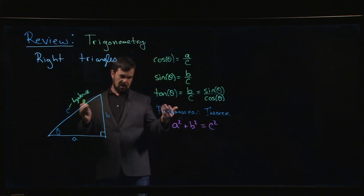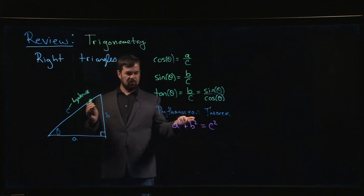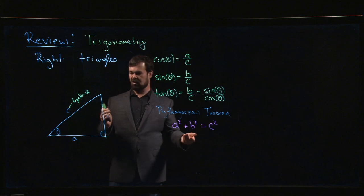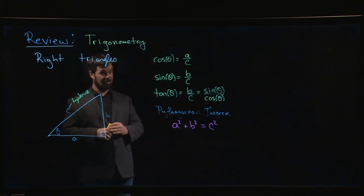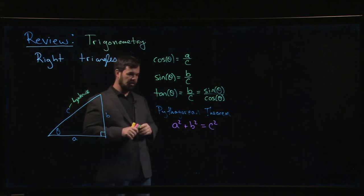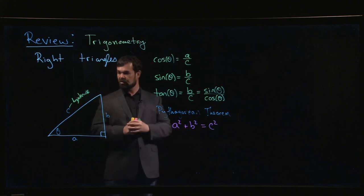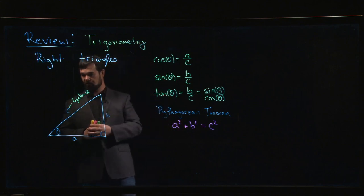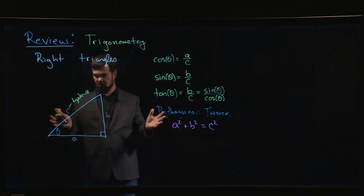But of course, most of the time, if you choose two integer values, let's say you choose integer values for A and B, chances are C is not going to be an integer. It's probably not even going to be rational. It's going to be some square root. This was apparently something that was a little bit troubling for the Greeks who really wanted to believe that everything could be expressed in terms of integers and ratios of integers.